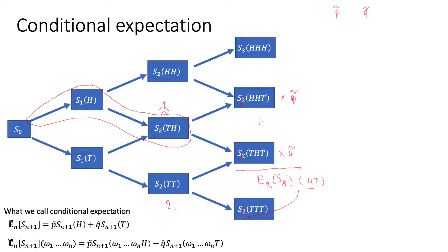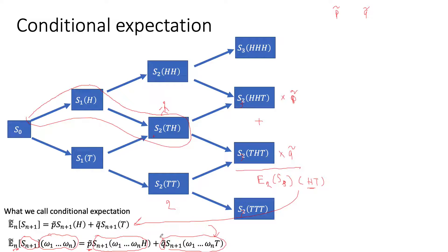This is exactly what these two formulas are trying to tell us. The expected value of the stock price in the next period, given that we know the first n coin tosses, is just the probability of the next toss being head multiplied by the stock price in the up scenario, and the same thing for the down scenario. That's pretty much what all conditional expectation is.